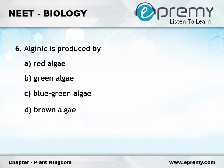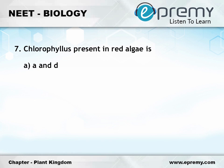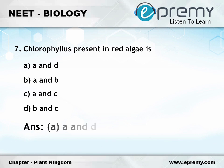The answer to question six is option D brown algae. Question number seven: chlorophyll present in red algae is option A a and d, option B a and b, option C a and c, option D b and c. The answer is option A a and d.